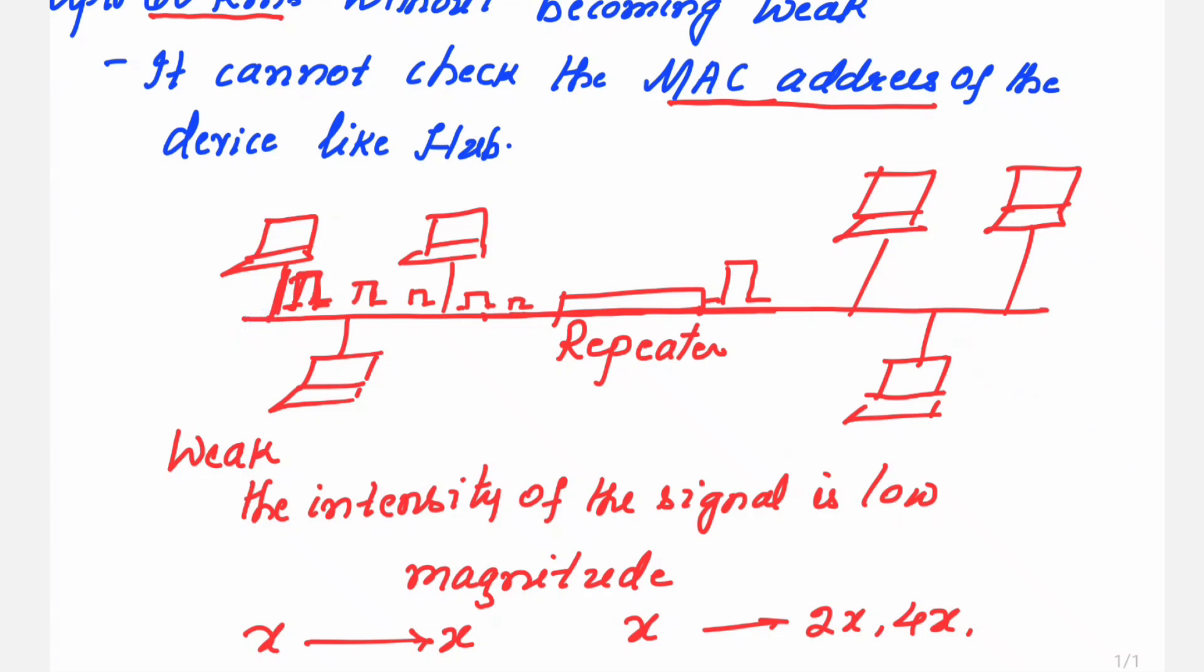Let us assume that if this is the node A which wants to send the signal to B. When the signal starts moving from this end, this particular repeater, when it receives the signal, it forwards the signal also to the other end of the network. That means it is not able to identify any device with the MAC address.